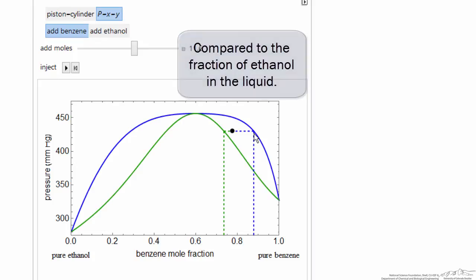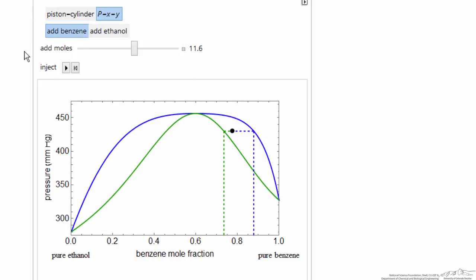So the mole fraction of benzene in the liquid phase is higher than the vapor phase. So we can use this, we could add ethanol instead of benzene, and we can use this to help understand the behavior in vapor liquid equilibrium for a system where we have an azeotrope present.